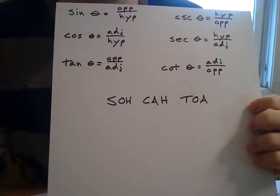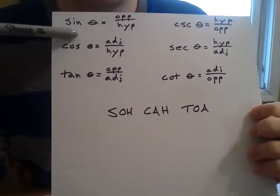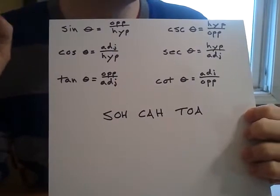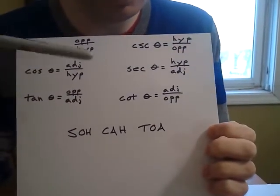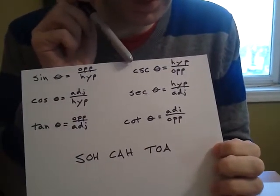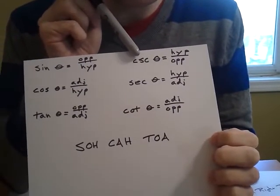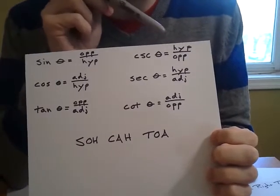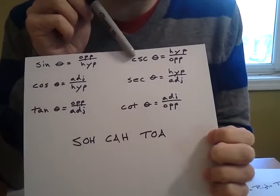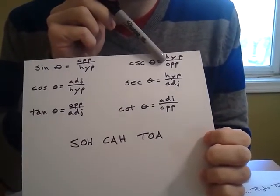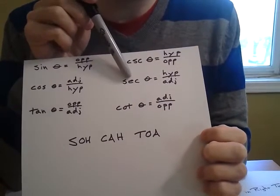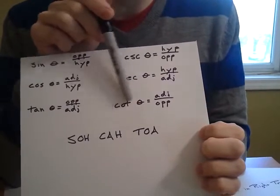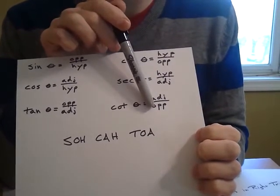That is our mnemonic device to remember these wonderful trig functions. We will, a little bit, use some of the other trig functions here, such as cosecant. That is just the flip, the reciprocal of sine. And that is just going to be cosecant hypotenuse over opposite. Secant of an angle is going to be hypotenuse over the adjacent. And cotangent is the adjacent over the opposite.